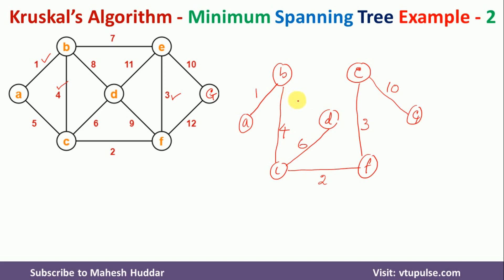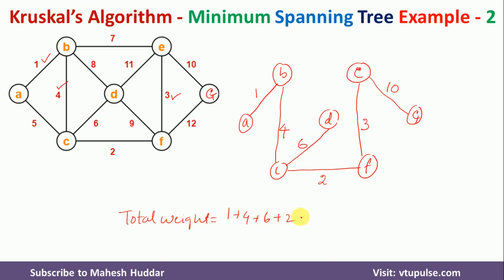So this is the final minimum spanning tree for this given graph. Next we will find the total weight of this minimum spanning tree. The total weight is 1 plus 4 plus 6 plus 2 plus 3 plus 10, which equals 26 units.